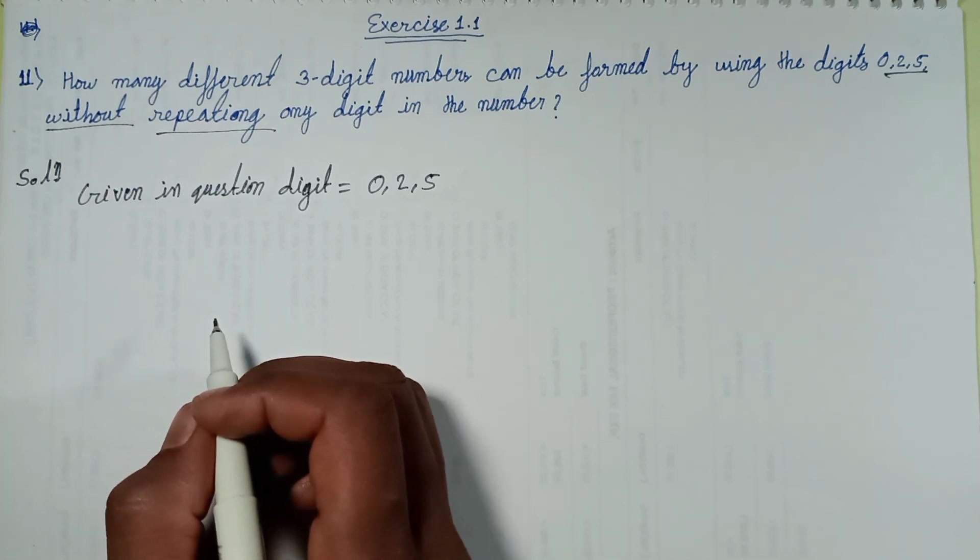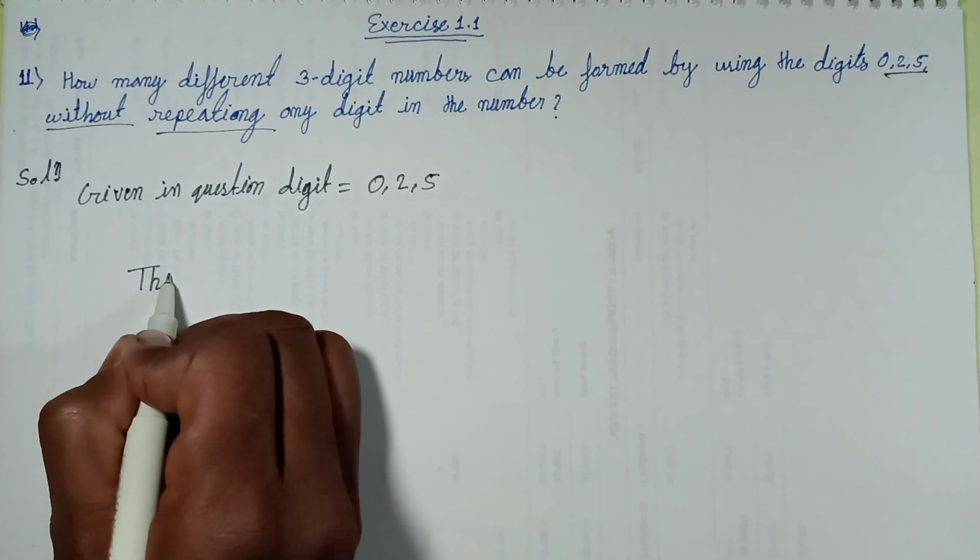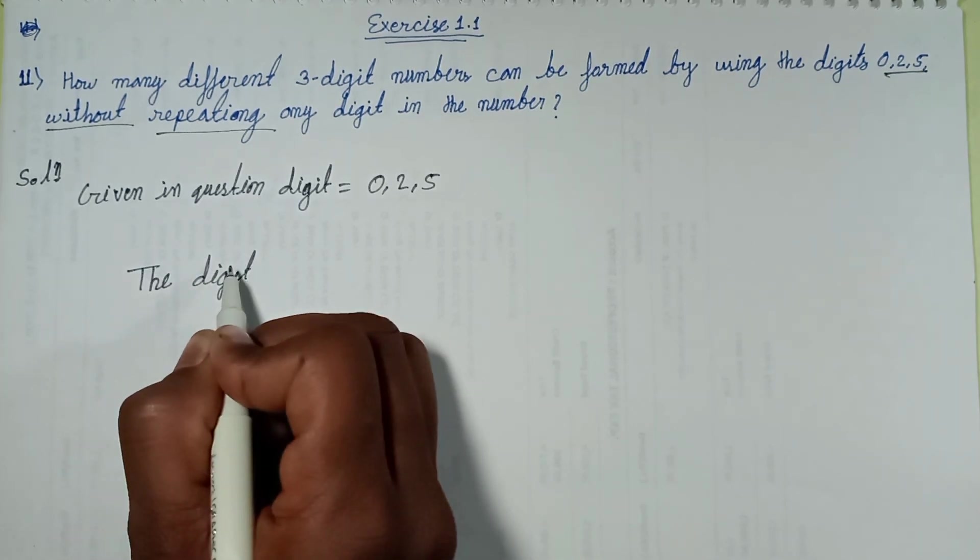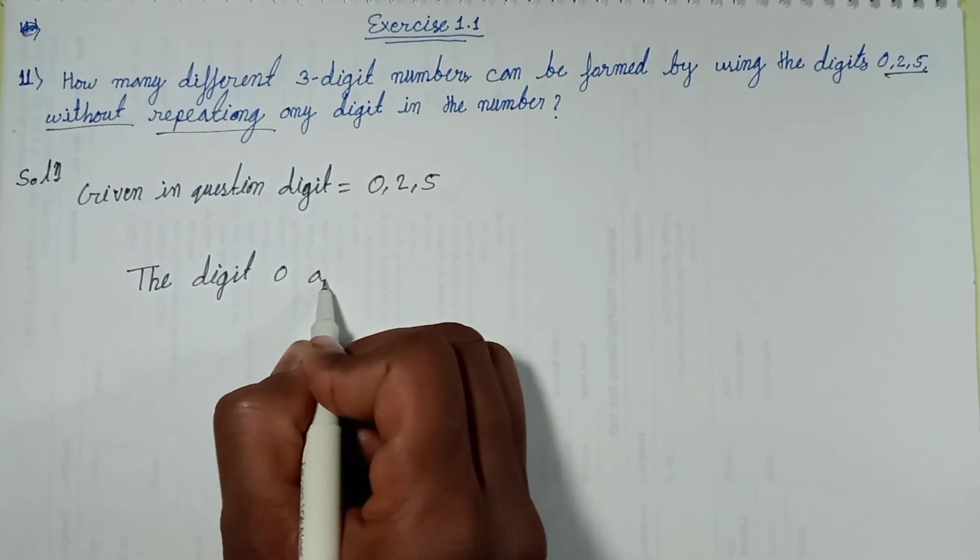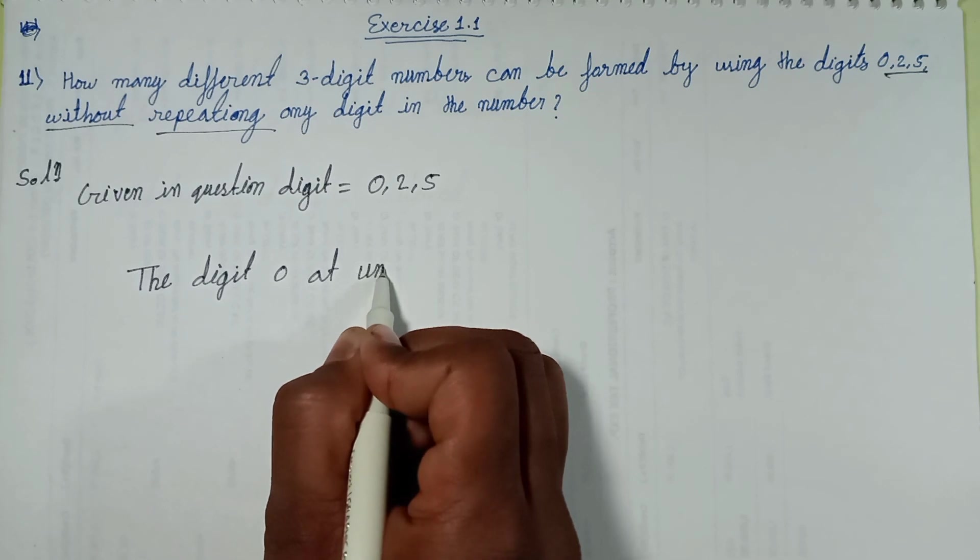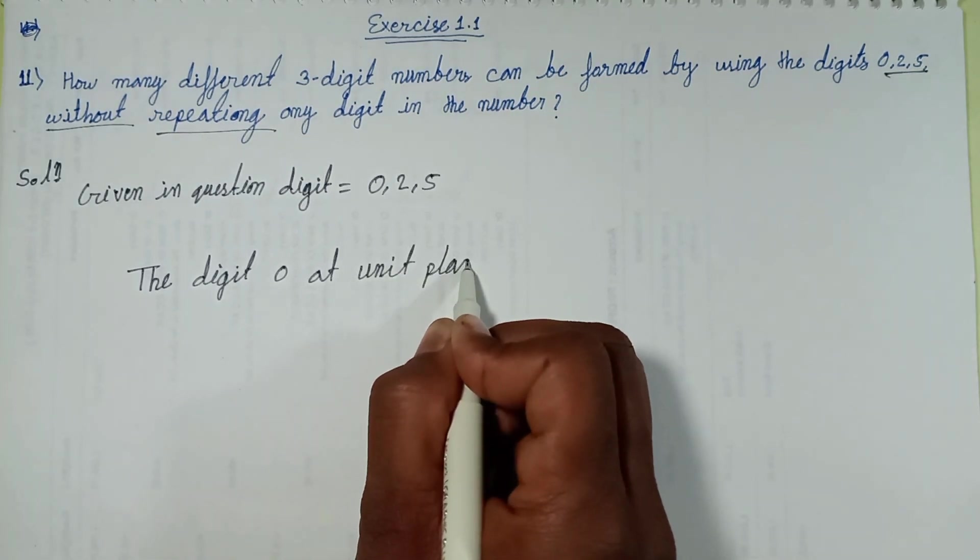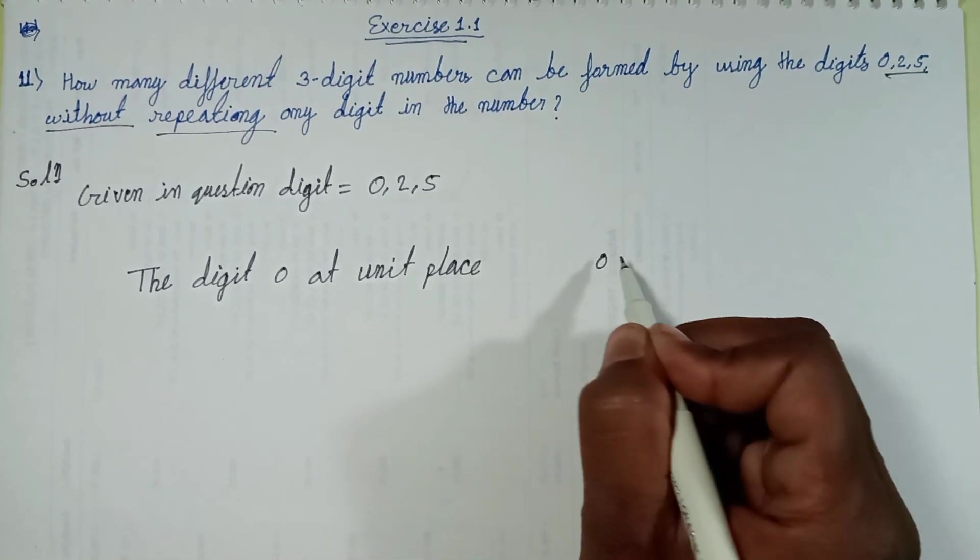Let's solve one by one. The digit 0 at units place. After all, 0 put in units place.